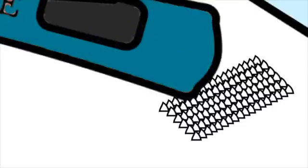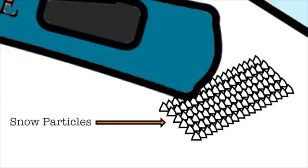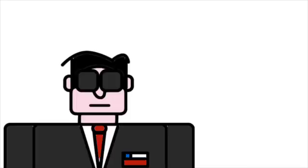If you run an unwaxed ski over the snow, you have little snow particles sliding across the base, like really fine-grit sandpaper, and it slows you down. What you want is to get those little particles out of the way, and that's where the wax comes in.